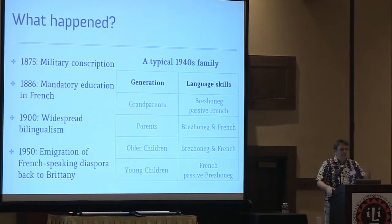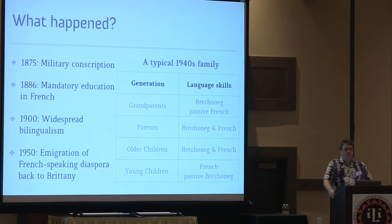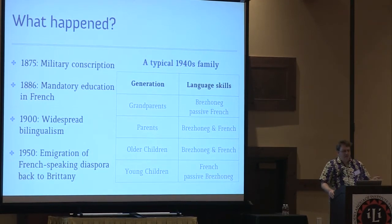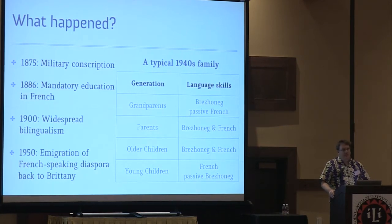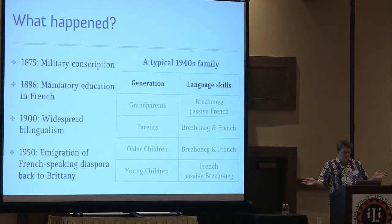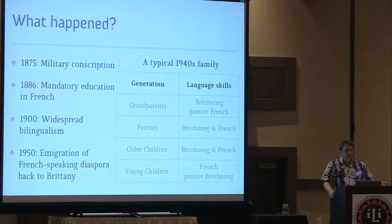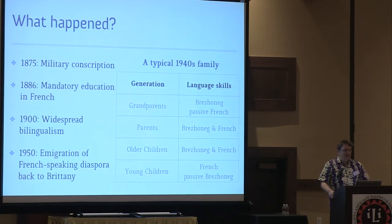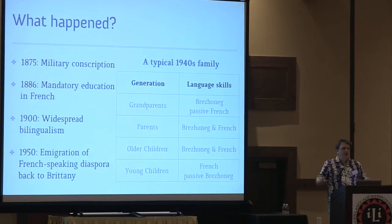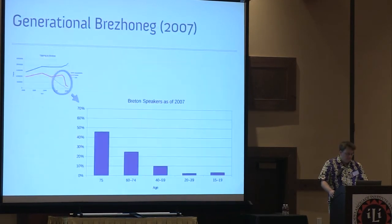What you end up with in the 40s and 50s — a typical family household — is all under one roof: grandparents who are Breton speakers with some French, their children who are fluent in both Breton and French, and then those parents' older children who were also stable bilinguals, but their younger children lost Breton almost altogether and were only French speakers. Within one household, older brothers versus younger sisters were speaking different languages. It's really fast.